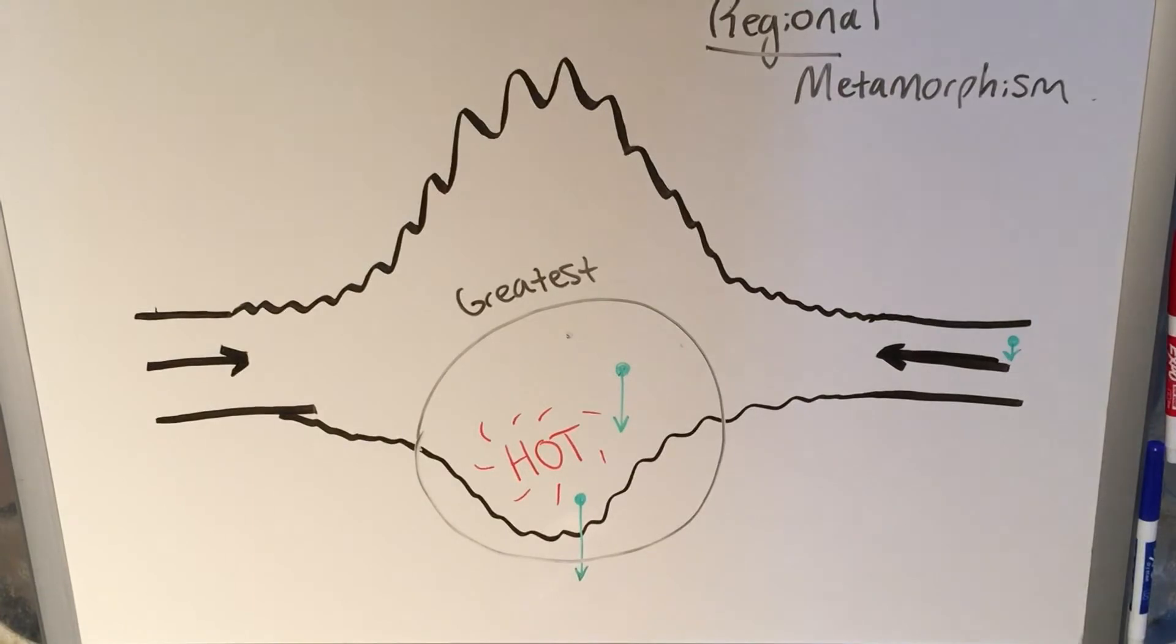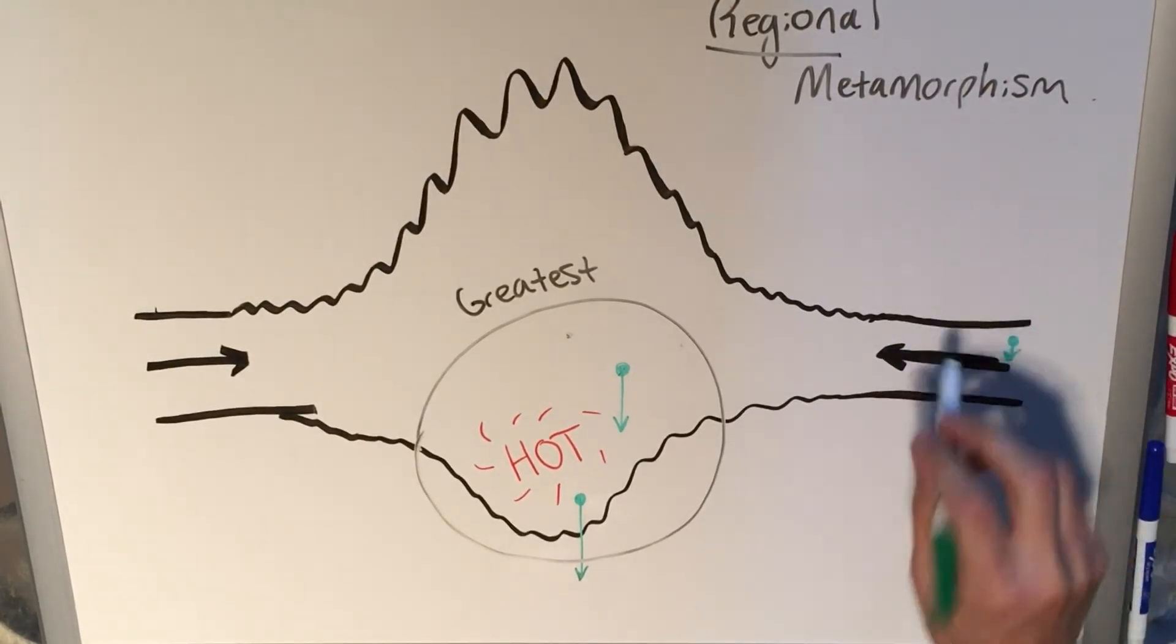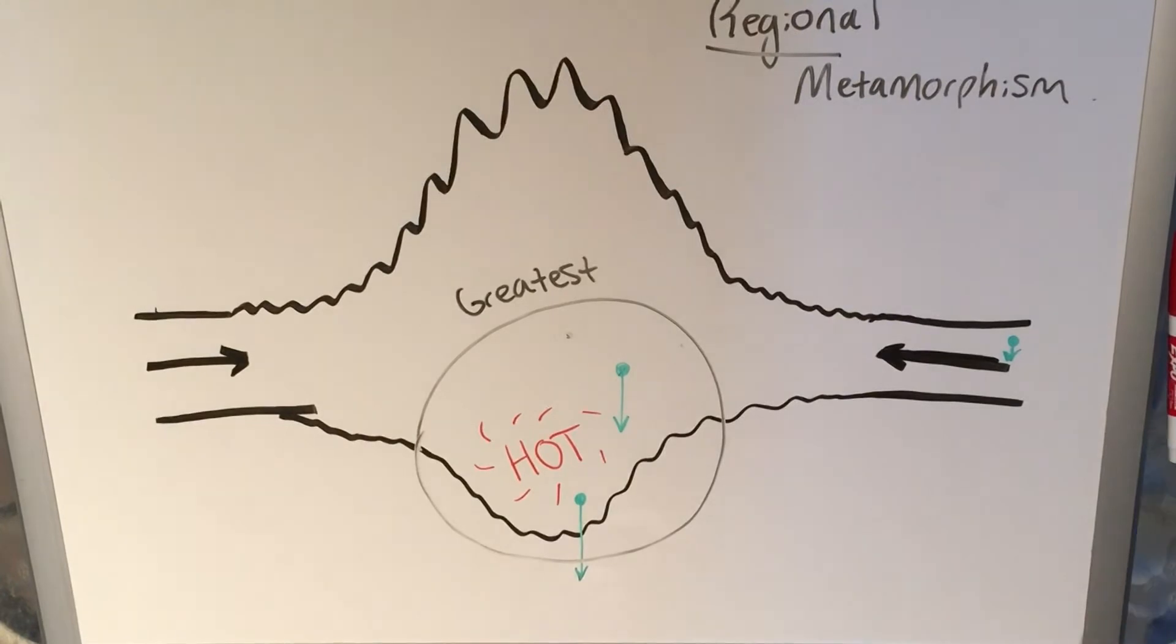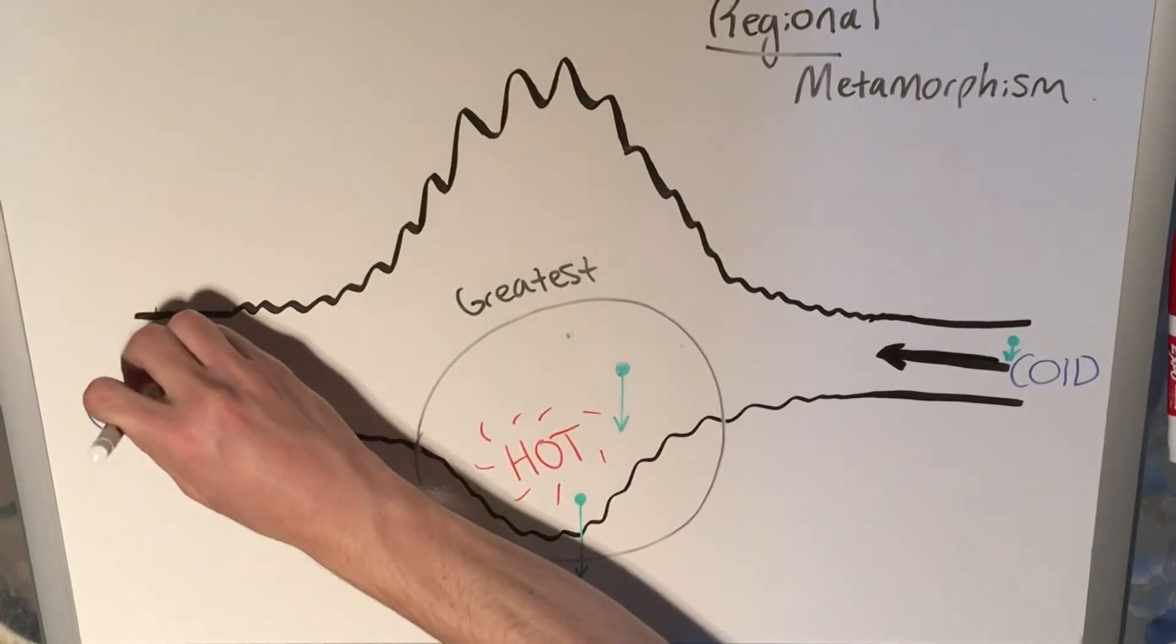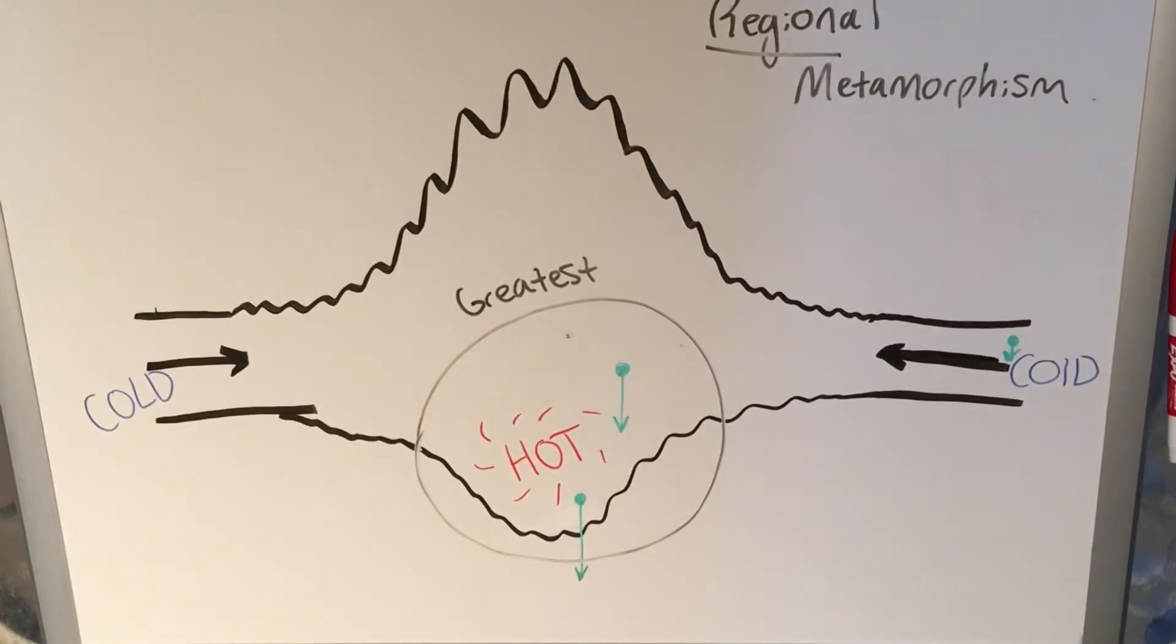Meanwhile, at other locations, let's say out on these edges. There's very little confining pressure. And as you can tell, it's relatively shallow within the Earth's crust. So it's going to be relatively cold. It's cold on the edges.